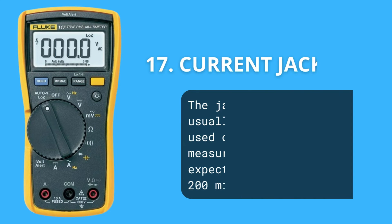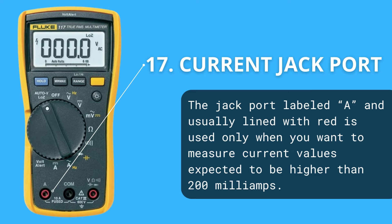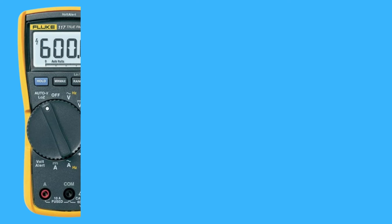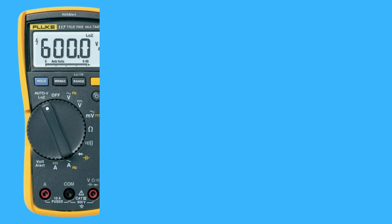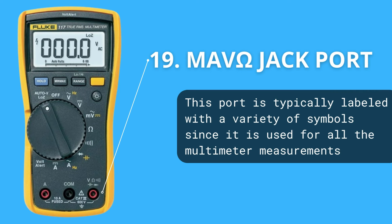The last three symbols are related to the probe ports. The first is the symbol for measuring high current. This is where the red probe goes. The port where the black probe always goes. And the last port is used to measure voltage, resistance, continuity and test diodes — this is where the red probe goes.